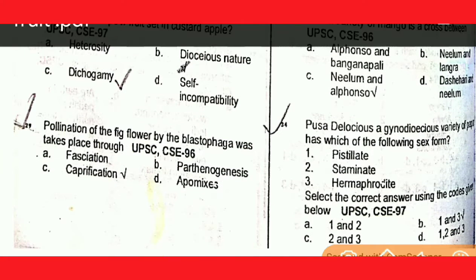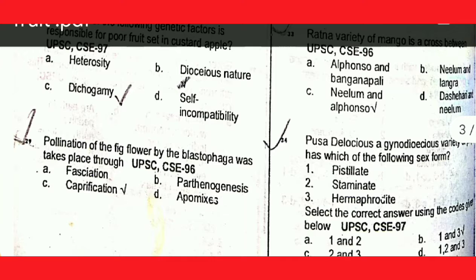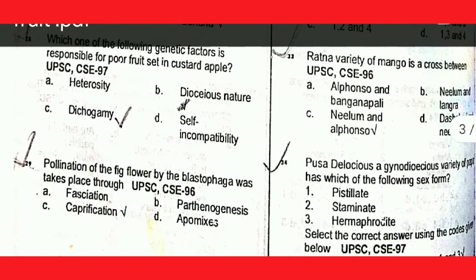Next question: which one of the following refers to the condition where male reproductive organs mature before the female in a flower? This is called protandry.